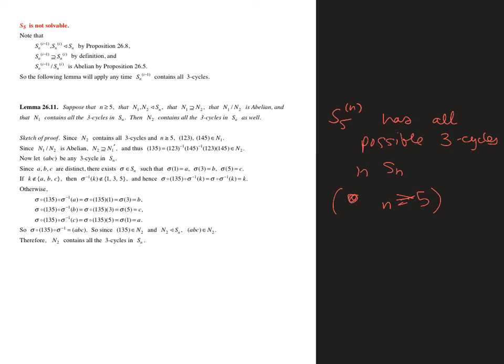This is a really cool proof — I'm going to do a separate video on the proof of this as an example of how to show something like this with cycles. The reason we need n to be greater than or equal to five is we need at most one overlapping element between these two permutations.